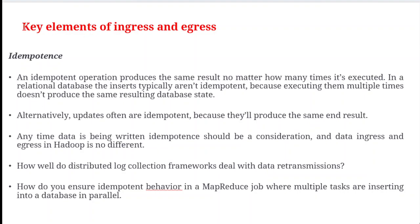Next we will see the key elements of ingress and egress mechanisms. The first one is idempotence. Idempotence means producing the same result no matter how many times we execute an operation — whether 10 times or 100 times, we get the same result. In relational databases, take the example of the insert operation — this insert operation is not idempotent.